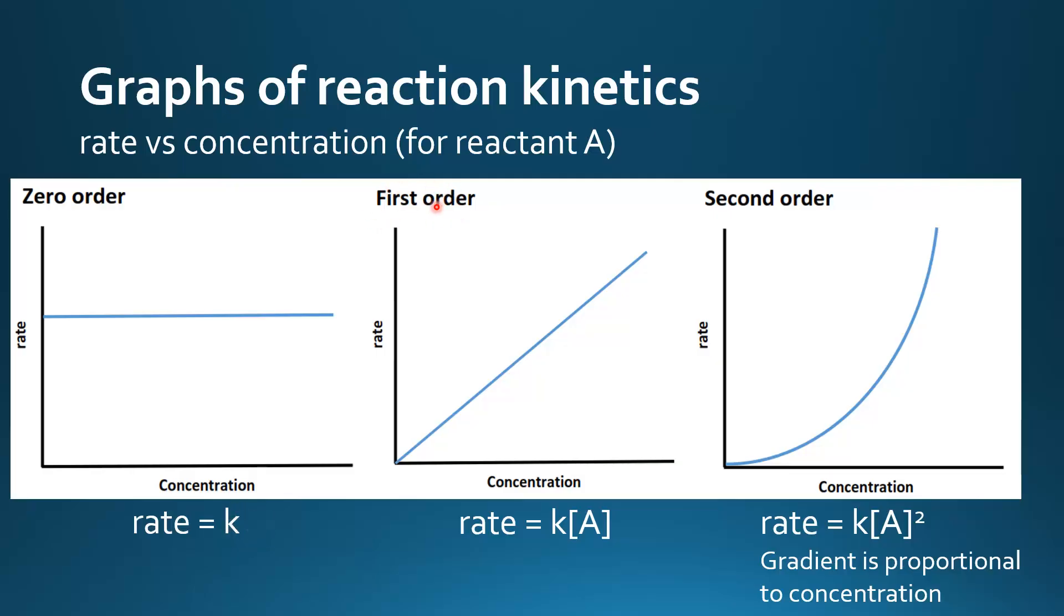Next is a first-order reaction. The rate of reaction is directly proportional to the concentration of A. So we have a straight line that passes through the origin. And the rate expression is rate equals K multiplied by the concentration of A.